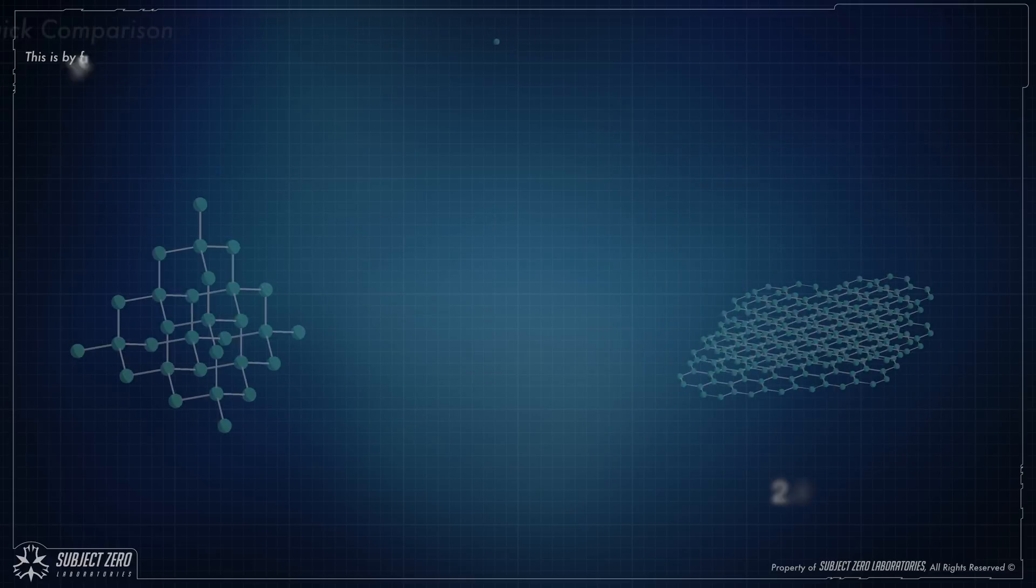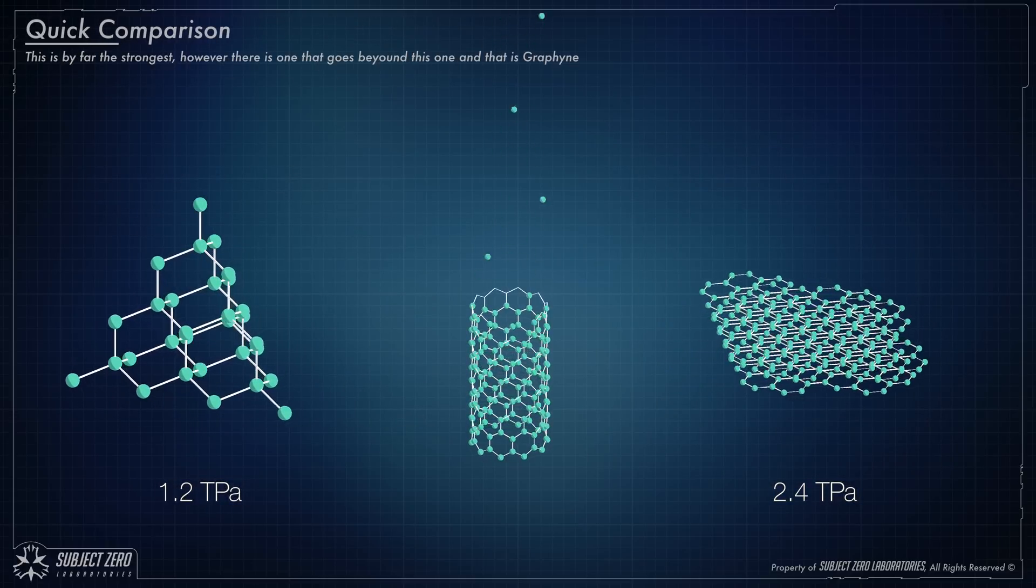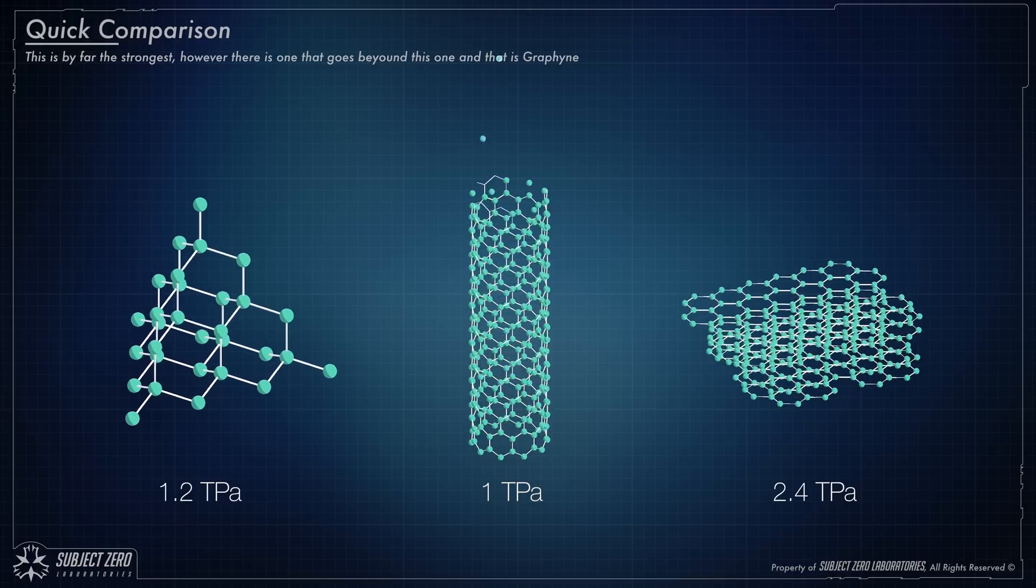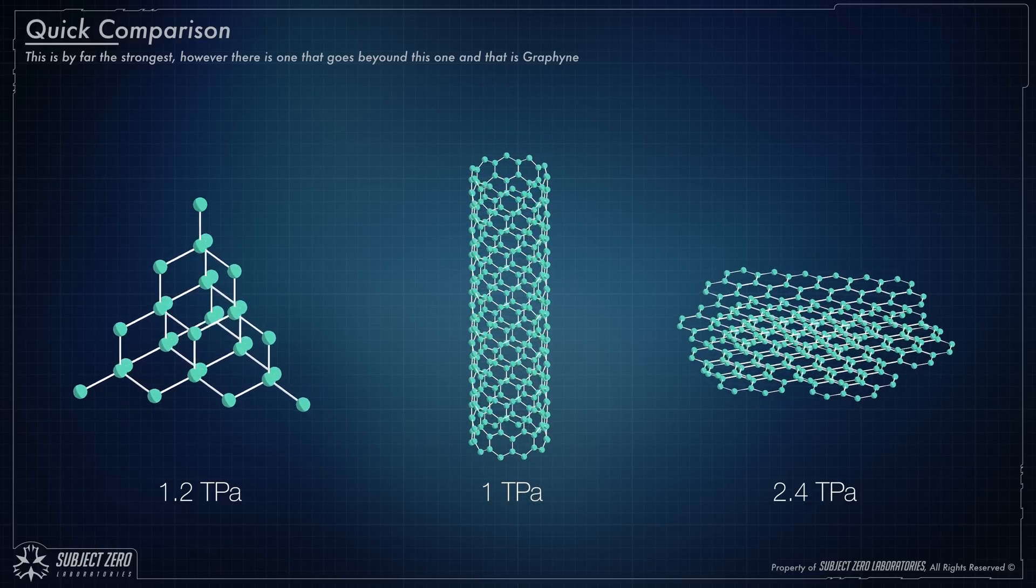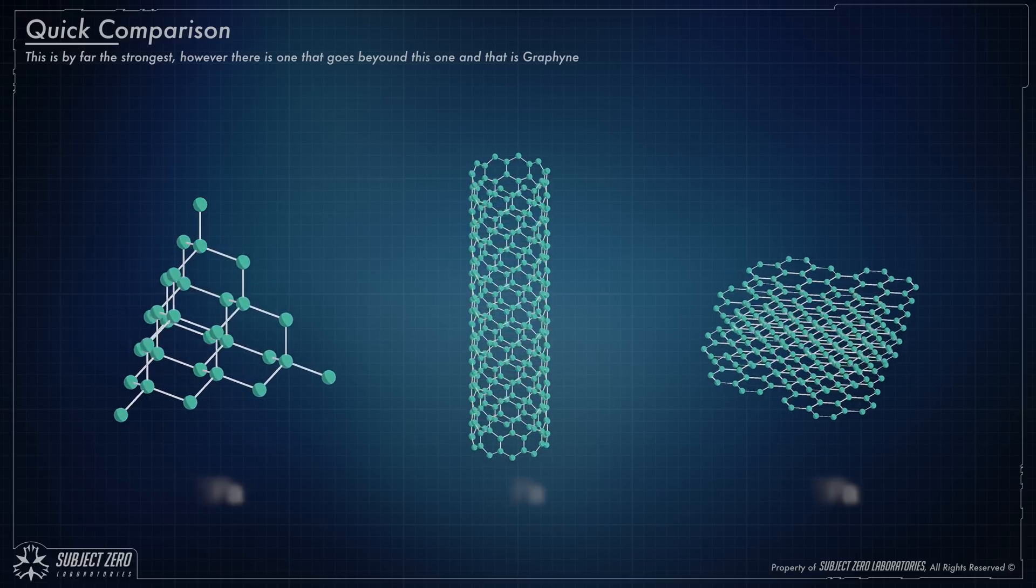So, in comparison, graphene is 2.4 Tera Pascal, while diamonds is 1.2 and nanotubes is 1 Tera Pascal. Now, I have to warn you, my dear viewer, that these numbers are all over the place. So, just for simplicity's sake, the numbers that you see here are the ones that I found in scientific papers.